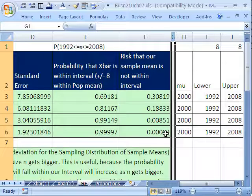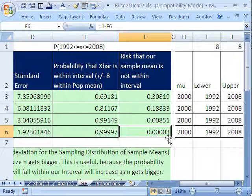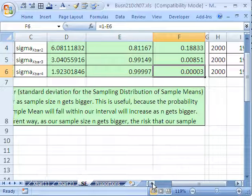So it gets much, much smaller. So down here, the risk we run of not having our sample mean in that interval gets very small. And in chapter 9, we'll be dealing with this all the time. Now, let's just look at the relationship here. We mentioned this in an earlier video.